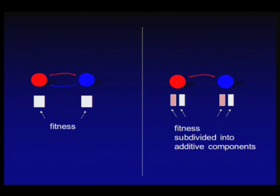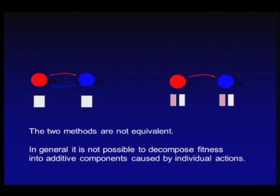In general, it is not possible to decompose fitness into additive components caused by individual actions. Our paper was opposed by five letters published in Nature signed by 130 people wanting to vote kin selection back into the picture. But none of these letters commented on our mathematical analysis or pointed out a mistake in our argument.